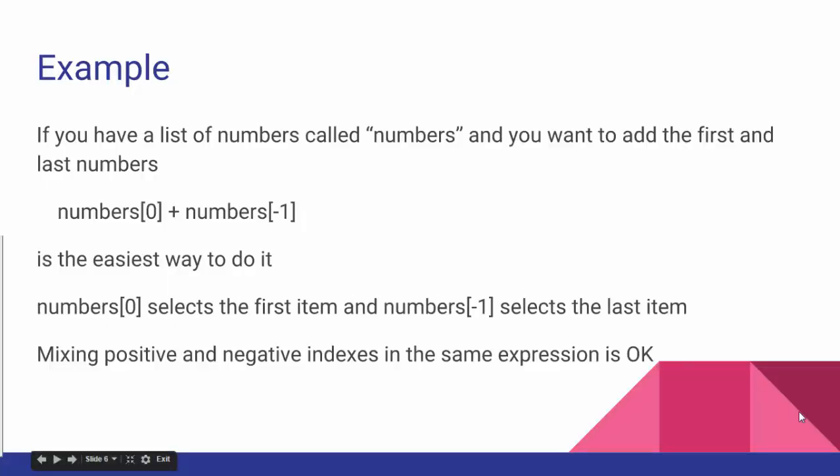Here's an example. If you have a list of numbers called numbers and you want to add the first and last items in that list, this is the easiest way to do it. Numbers[0] will select the first item and numbers[-1] will select the last item. As you can see, it's perfectly okay to mix positive and negative indexes in the same expression.